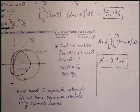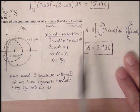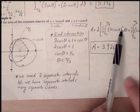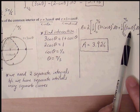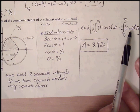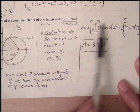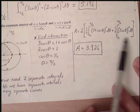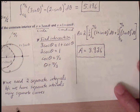Here's the formula: the first integral is from 0 to pi over 3 of one half r squared d theta using the cardioid, and the second integral is from pi over 3 to pi over 2 of one half times (3 cosine theta) squared d theta for the circle. We distribute the factor of 2 through to cancel the one half, then use our calculator to add the results together, getting an area of approximately 3.926.